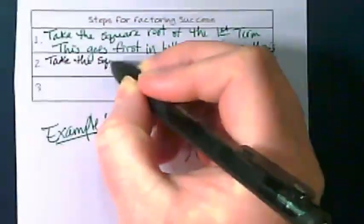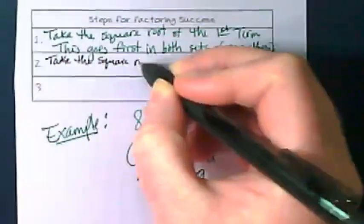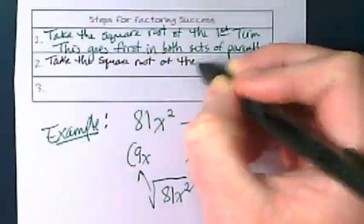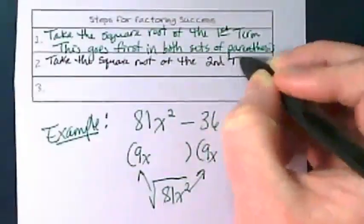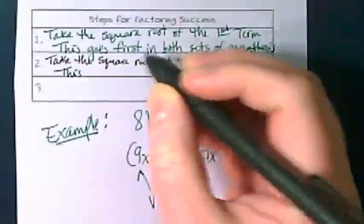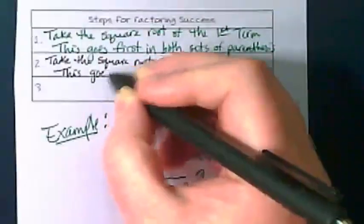Second step: take the square root of the second term. This goes last in both sets of parentheses.